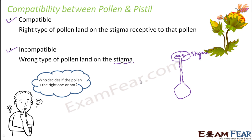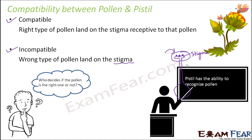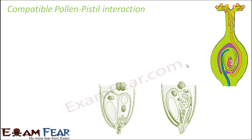The question is: who decides if the pollen is the right one? Obviously the pistil has to decide, because the pollen is falling on the pistil, so the pistil has to decide whether entry needs to be given to the pollen or not. The pistil has the ability to recognize the pollen. We will see what kind of ability that is very soon.